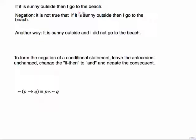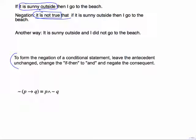For example: if it is sunny outside, then I go to the beach. One way to negate this is to put 'it is not true that' in front of it. Another way, using our rule: leave the antecedent unchanged — 'it is sunny outside' — change the then to AND, and negate the consequent. 'I go to the beach' becomes 'I did not go to the beach.' So the negation is: it is sunny outside, and I did not go to the beach.